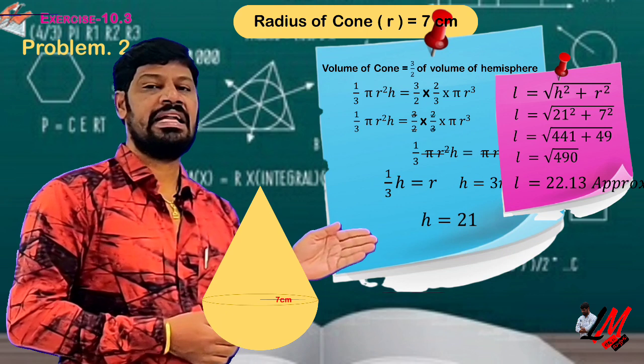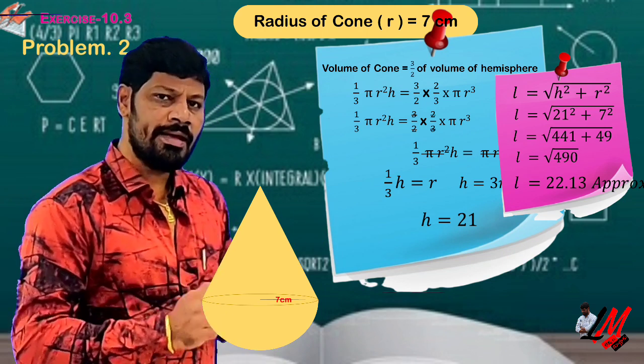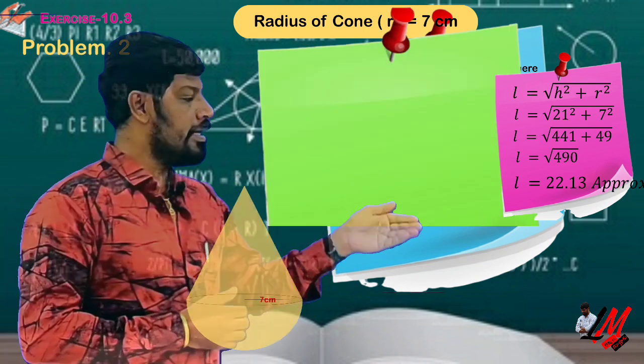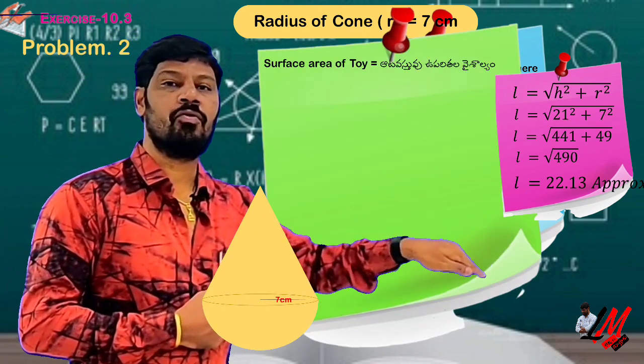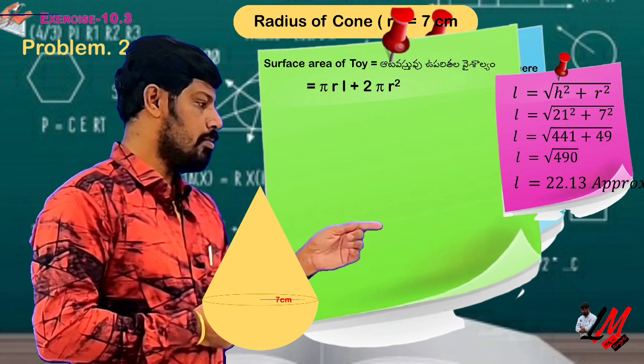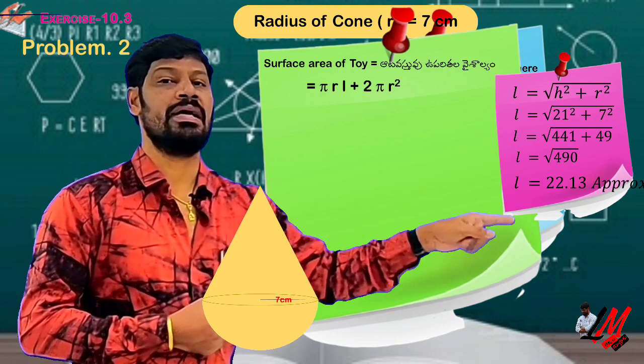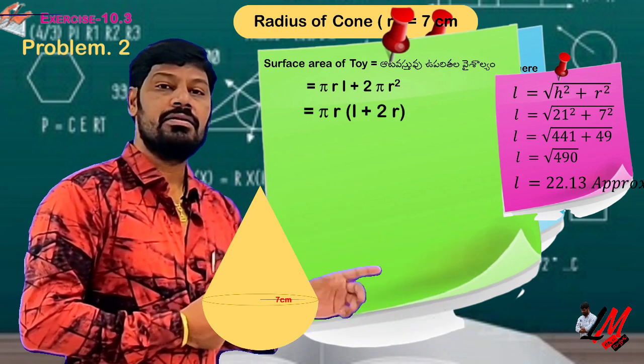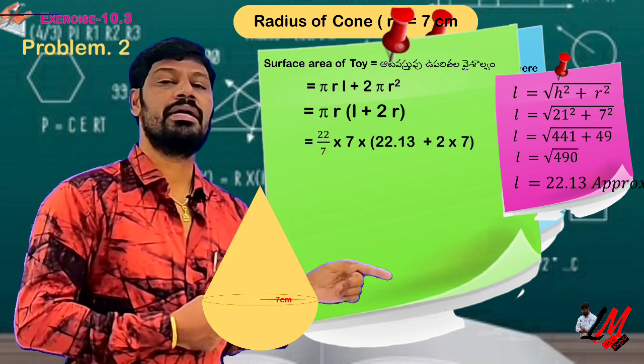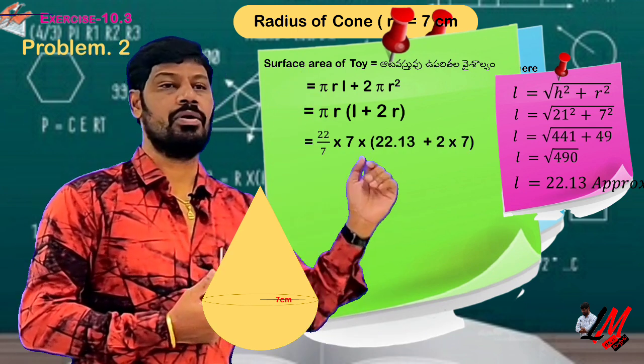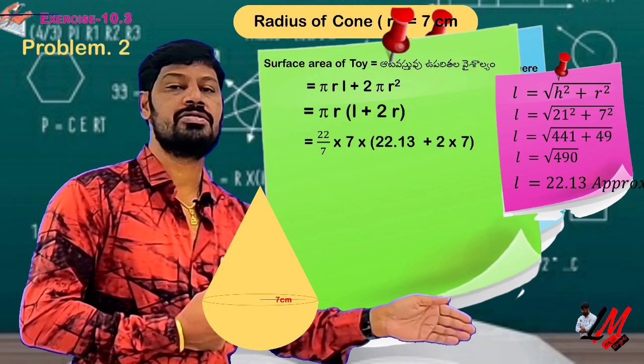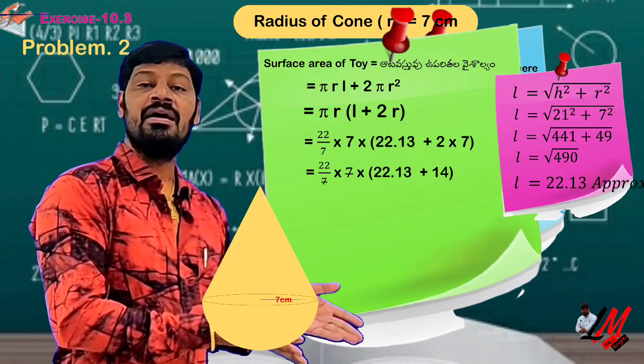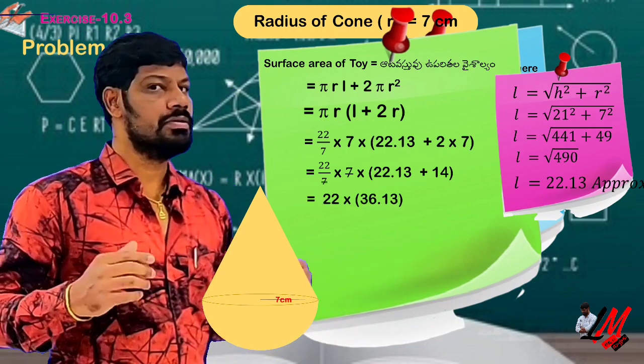The surface area of toy is equal to CSA of cone plus CSA of hemisphere. The formula is pi r l plus 2 pi r square. Pi r common is l plus 2r. So, pi 22 by 7, radius 7, 22 by 7 times L. Next 2r is equal to 14. If you calculate it, the final answer is something cm squared.